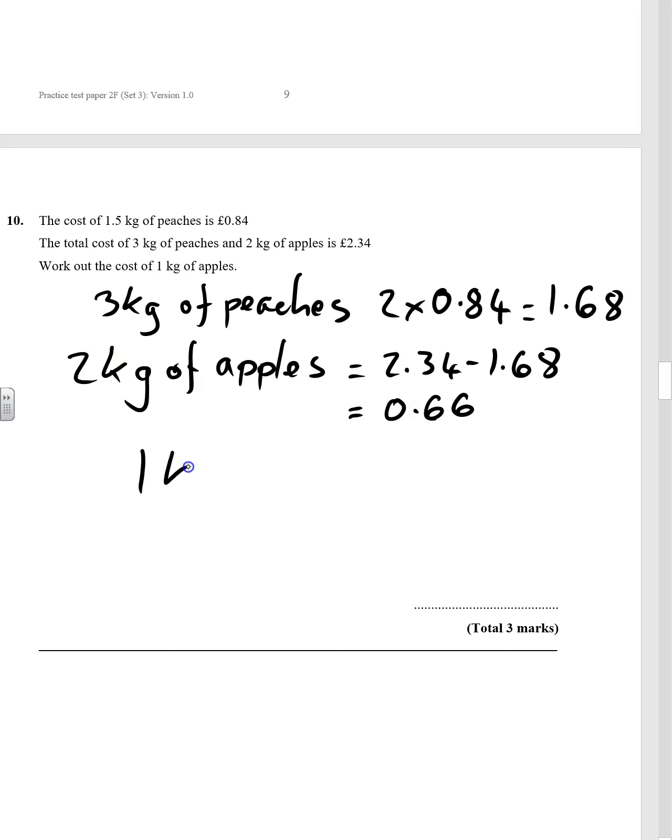I only want one kilo, so I'm going to have to do 0.66, 66p, divided by two, which gives me 0.33. So the actual answer is £0.33.